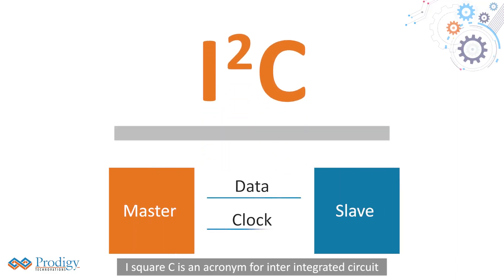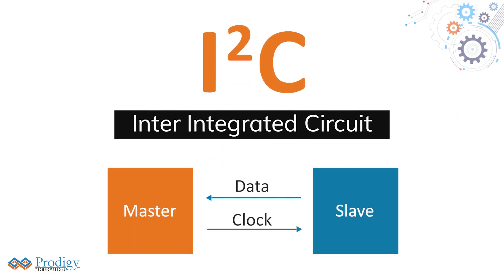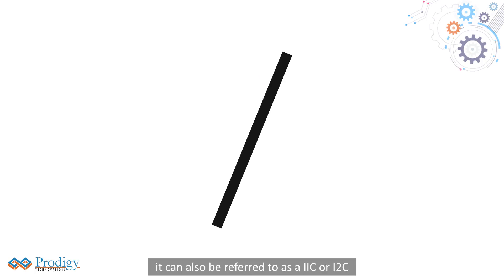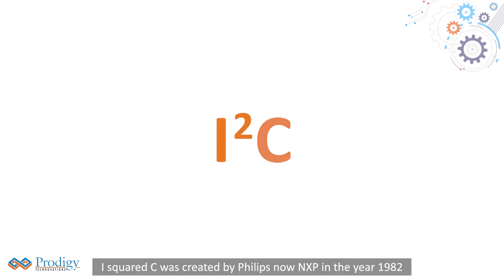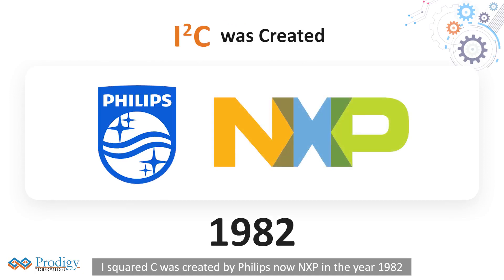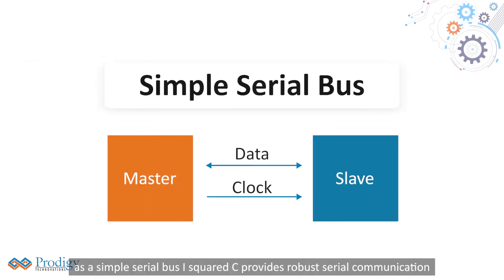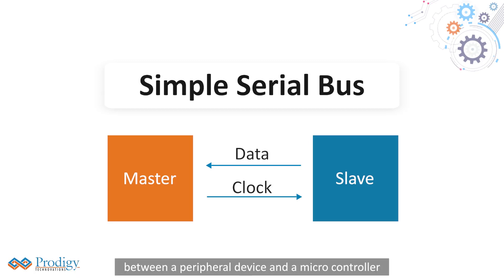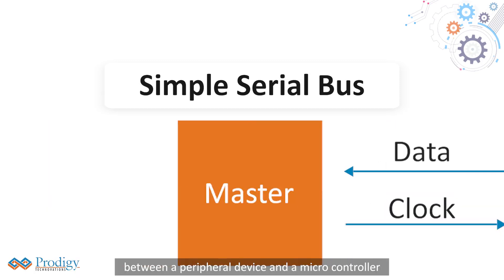I2C is an acronym for Inter-Integrated Circuit. It can also be referred to as IIC or I2C. I2C was created by Philips, now NXP, in the year 1982. As a simple serial bus, I2C provides robust serial communication between a peripheral device and a microcontroller.